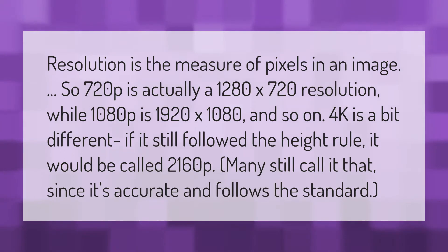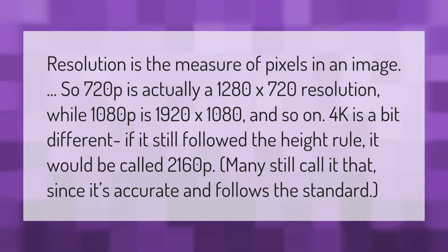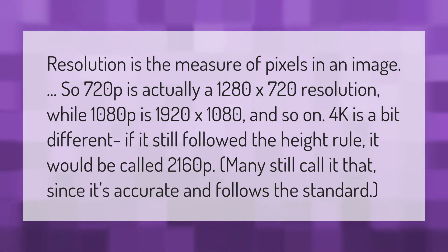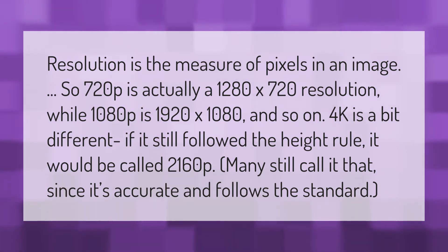Resolution is the measure of pixels in an image, so 720p is actually a 1280 by 720 resolution, while 1080p is 1920 by 1080. 4K is a bit different — if it still followed the height rule, it would be called 2160p. Many still call it that, since it's accurate and follows the standard.